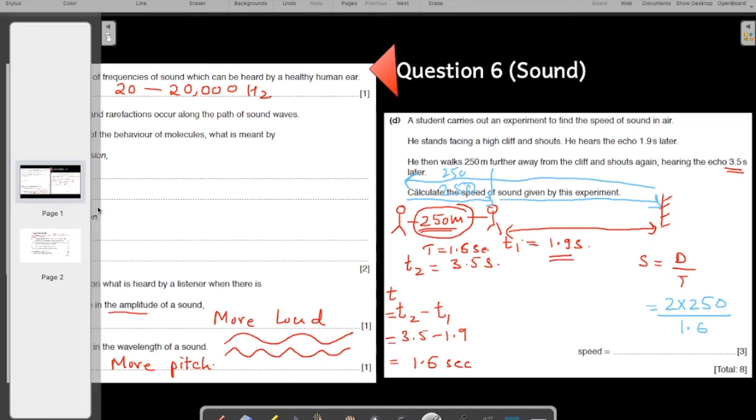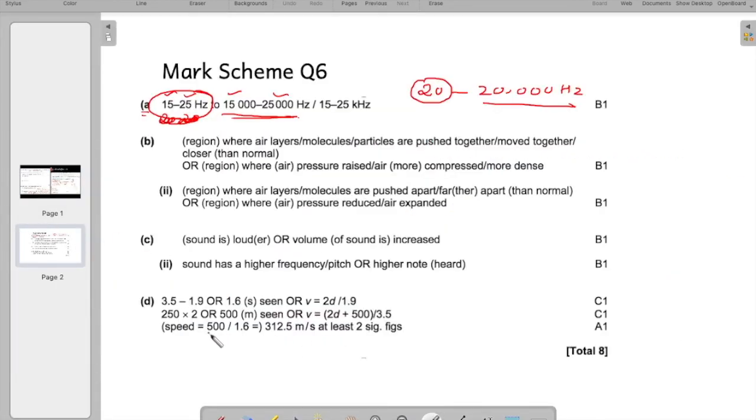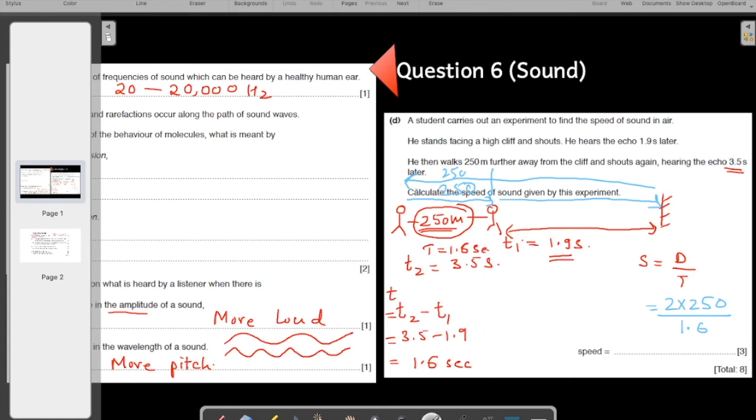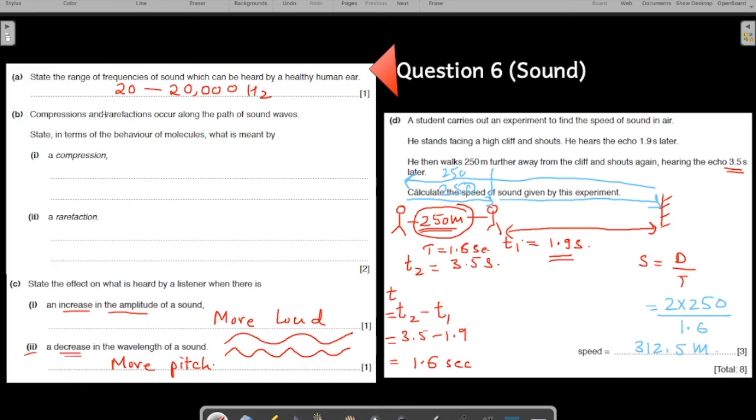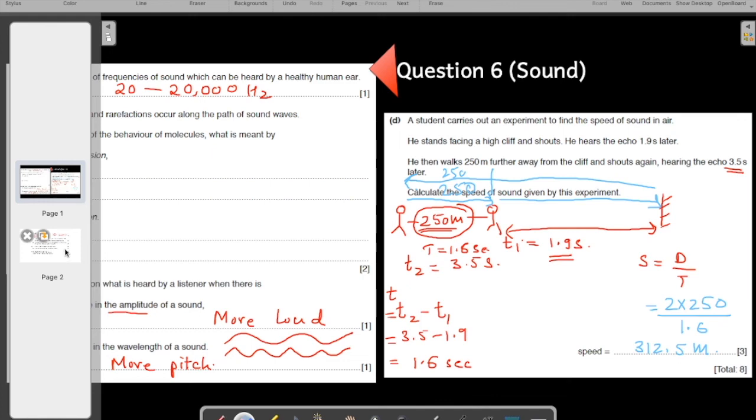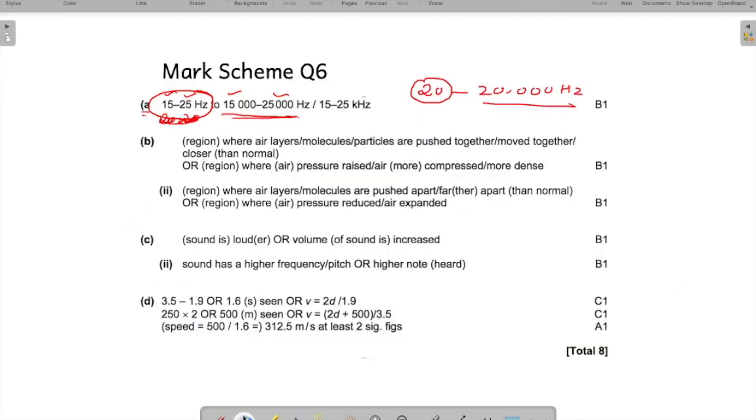If you do these calculations, you should get your answer. They are doing the same thing, 500 divided by 1.6, which is 312.5 meters per second. Your answer should be 312.5 meters per second. If you still have any questions or queries, you can get back to me in the comment section. Here I am showing the mark scheme for you all to refer again. If you have any doubts, please get back to me in the comment section. Thank you.